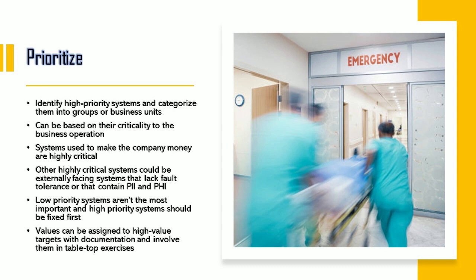Step two is Prioritize. This is a step where you identify the high-priority systems and categorize them into groups or business units and assign business value to that asset group. This can be based on their criticality to the business operation. Systems that need to be running to make a company money are considered to be highly critical.